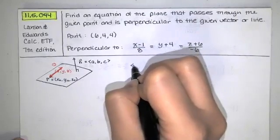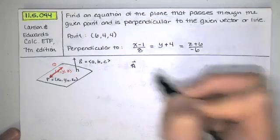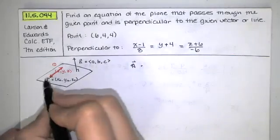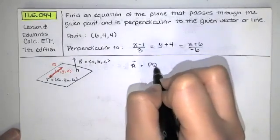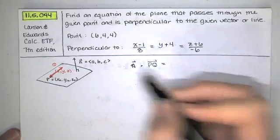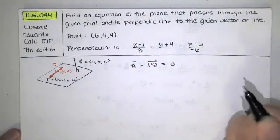So if I want to state the equation of a plane one way I can do it is I can take the normal vector and I can dot it with the vector PQ and since those are always orthogonal to each other that dot product has to be zero.